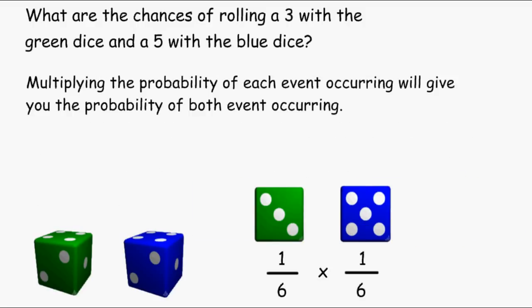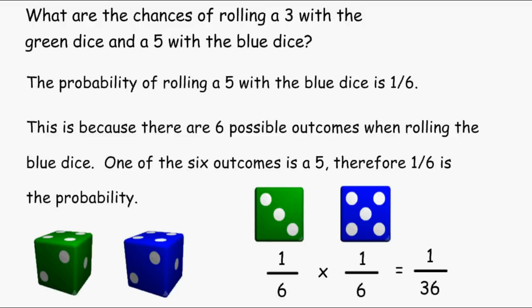So what we have to do is take those independent probabilities and multiply those together. And 1 sixth times 1 sixth is 1 36th. Now what that means is there are 36 possible outcomes when we roll these pair of dice, and out of those 36 possible outcomes, a combination of a 3 with the green dice and a 5 with the blue dice is one of those 36 possibilities.